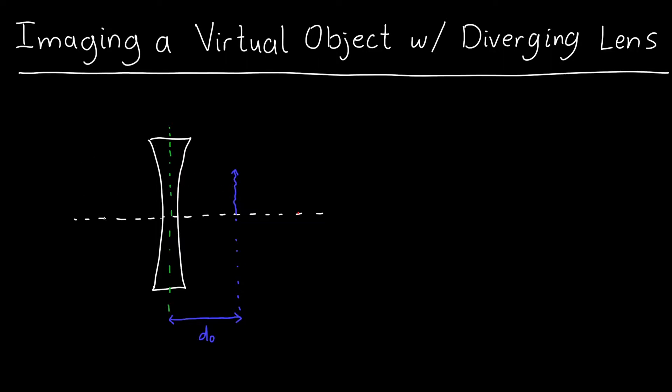So conventionally, real objects are to the left and they get imaged through to the right. But now we've got an object to the right. And let's say that DO here is negative 10 centimeters. Remember that if object distances are to the right of the lens, they're negative.